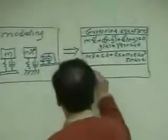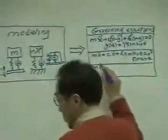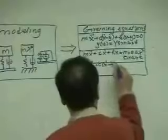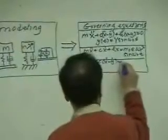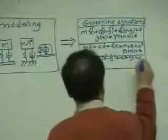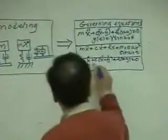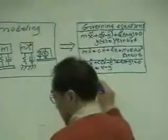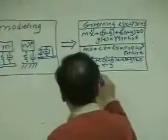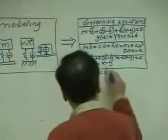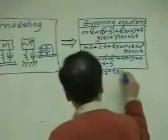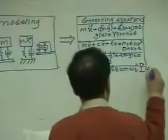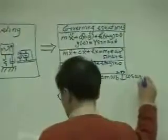And then, for the measurement device case, the governing equation we had was the same as the base excitation case, but what we measure is z, that is x minus y. Therefore, we have the governing equation like this in terms of z, that is kz equal m omega b square y cos omega b t.